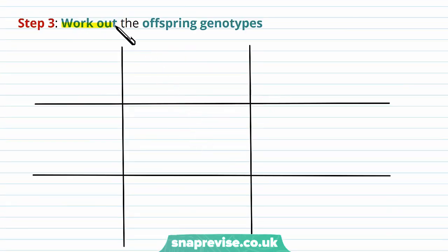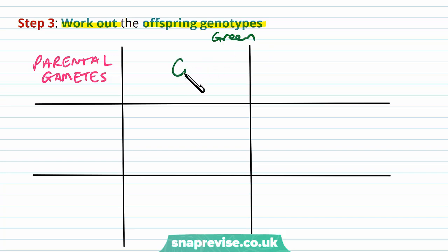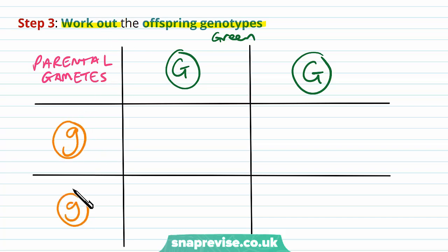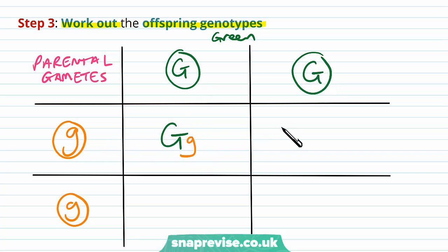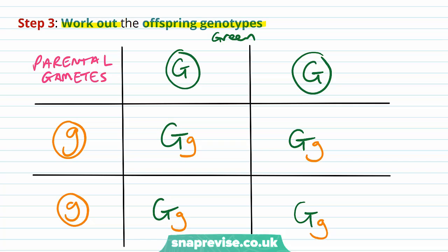Then you put this all together into a square and work out the offspring's possible genotypes — put the parental gametes into the surrounding grids. The green pea pod had gametes of uppercase G or uppercase G, and the gametes of the yellow one were little g, little g. You cross the gametes that will fuse: large G with little g gives large G, little g; and again large G with little g. So all four offspring will be large G, little g. These are the possible offspring genotypes when the pure green pea pod breeds with the pure yellow pea pod.